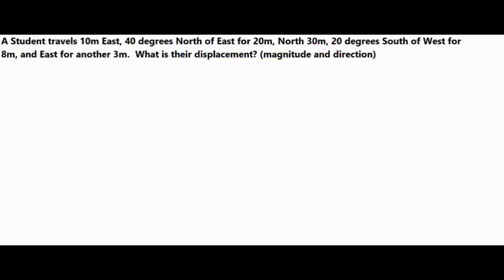In this video we're going to take a look at a difficult vector problem and try to break it down into a few simple steps. We have a student who travels 10 meters east, 40 degrees north of east for 20 meters, north 30 meters, 20 degrees south of west for 8 meters, and east for another 3 meters. What is their displacement? Give the magnitude and direction. First, go ahead and draw out each of these vectors.